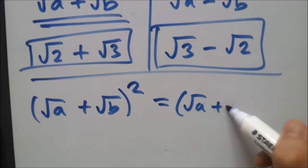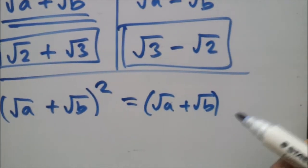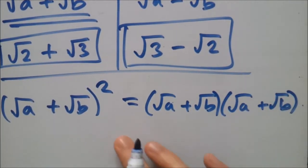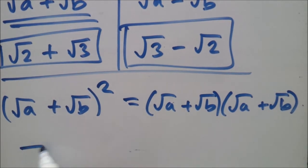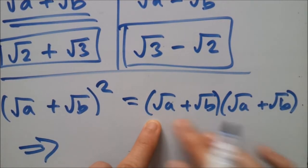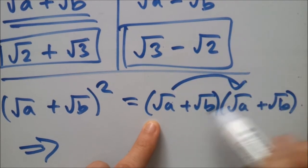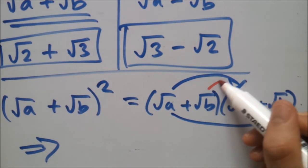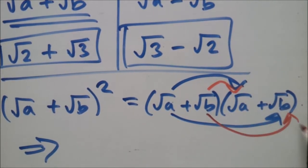Now how to expand these? Well, first we do this set times that set, so this times that and this times that. And then let's get another color - we have to do root b times that, root b times that. Okay, so first let's do the first two.